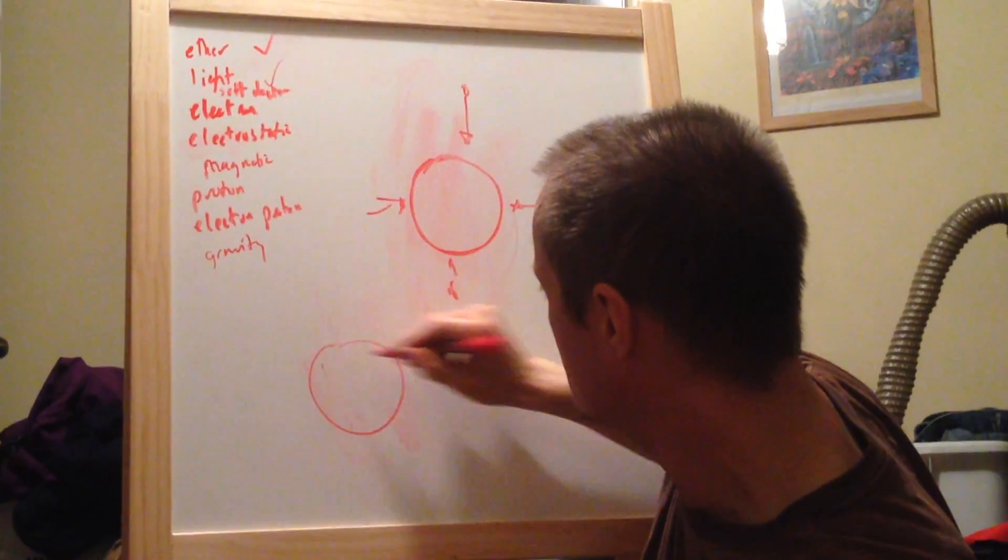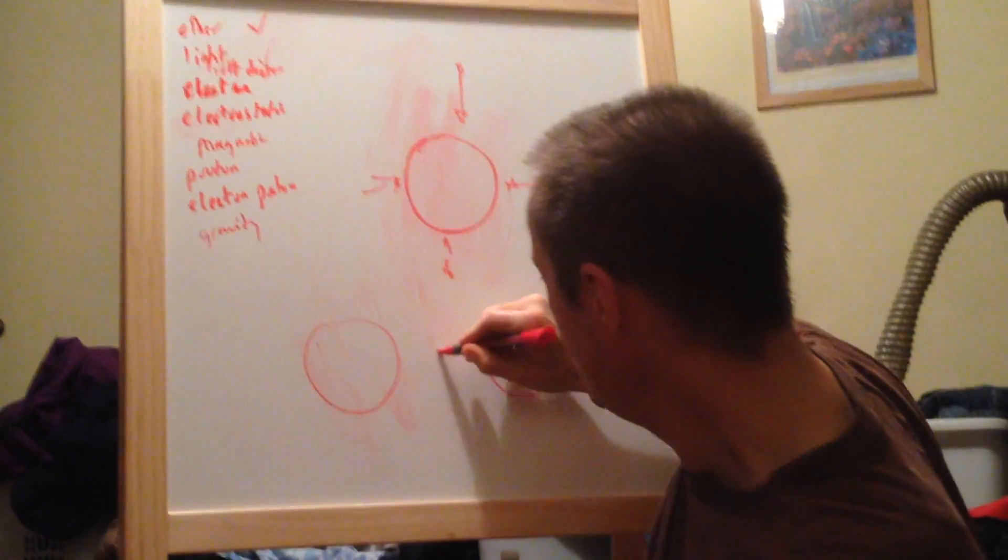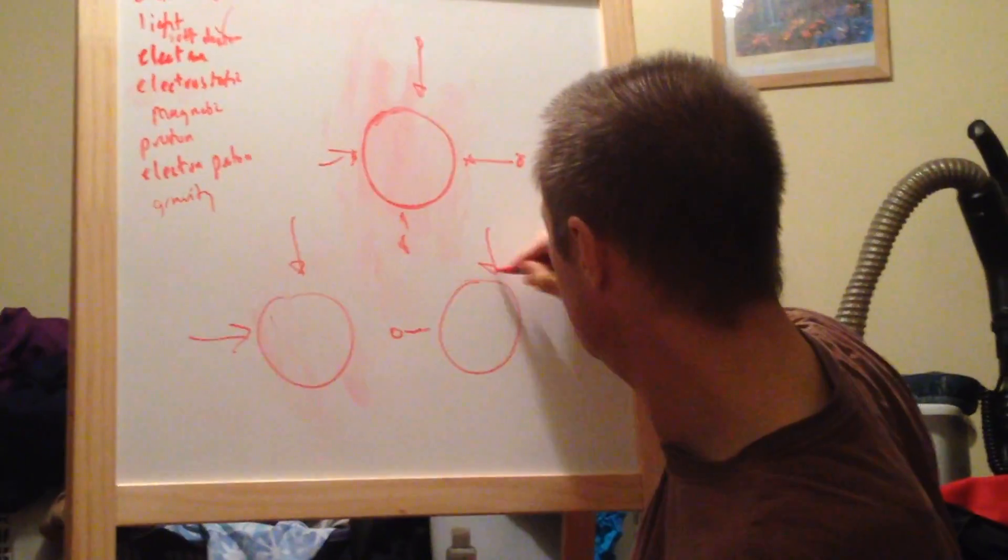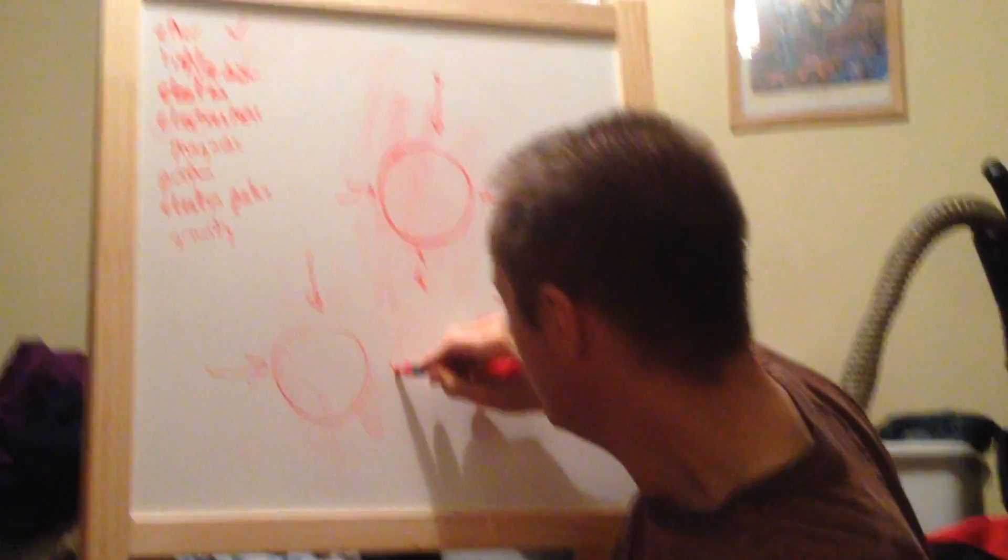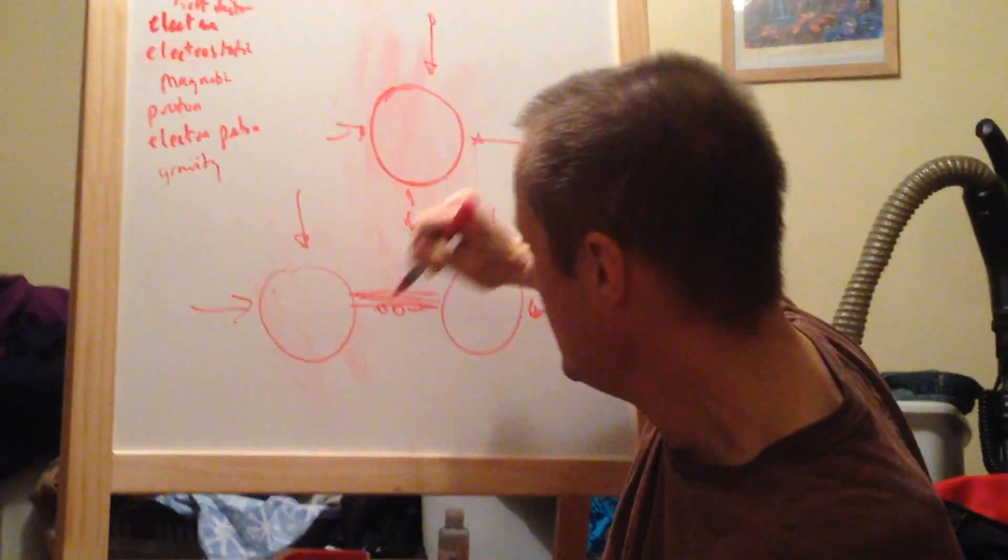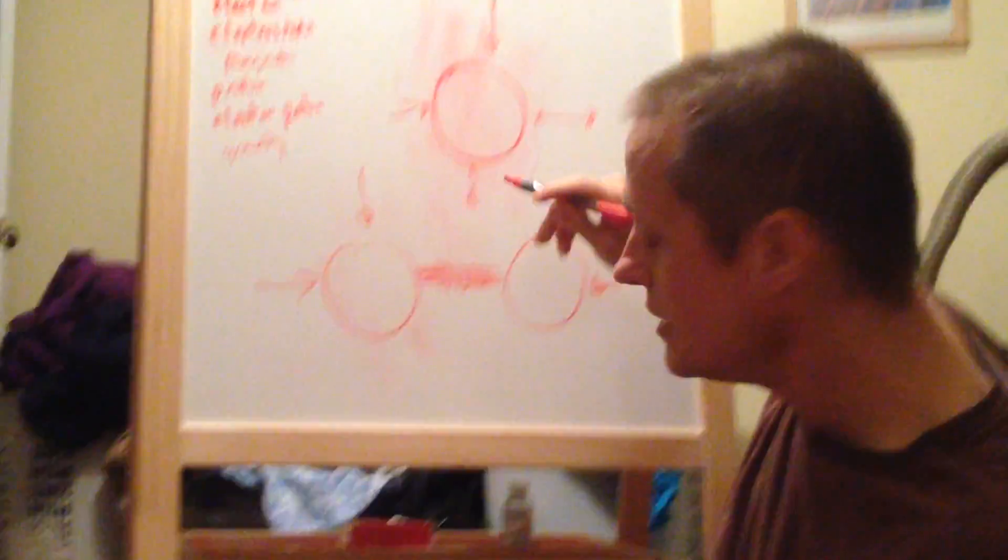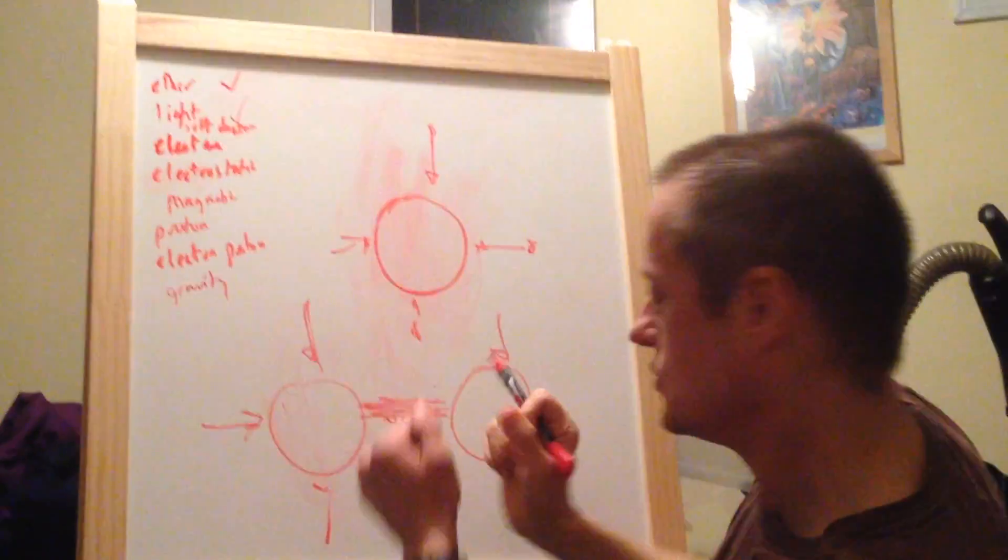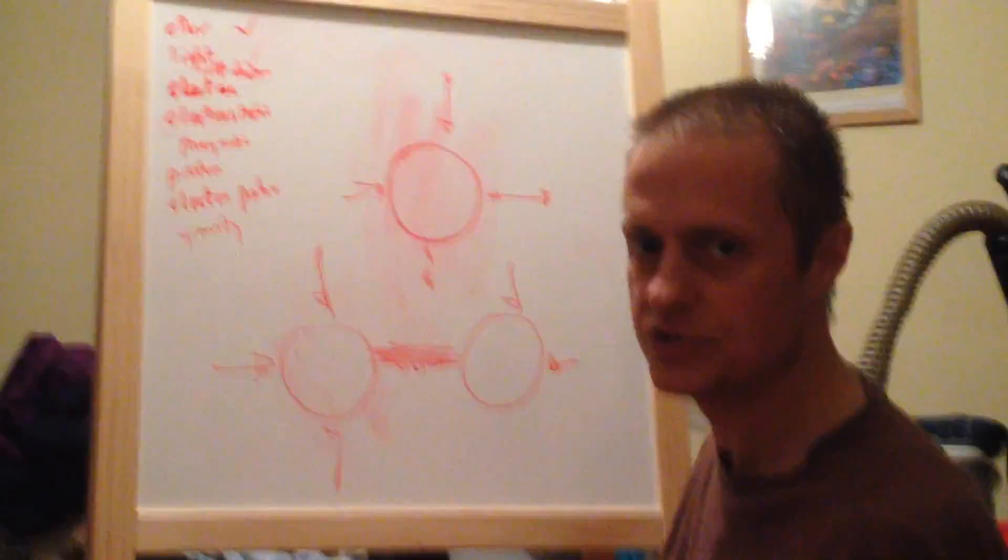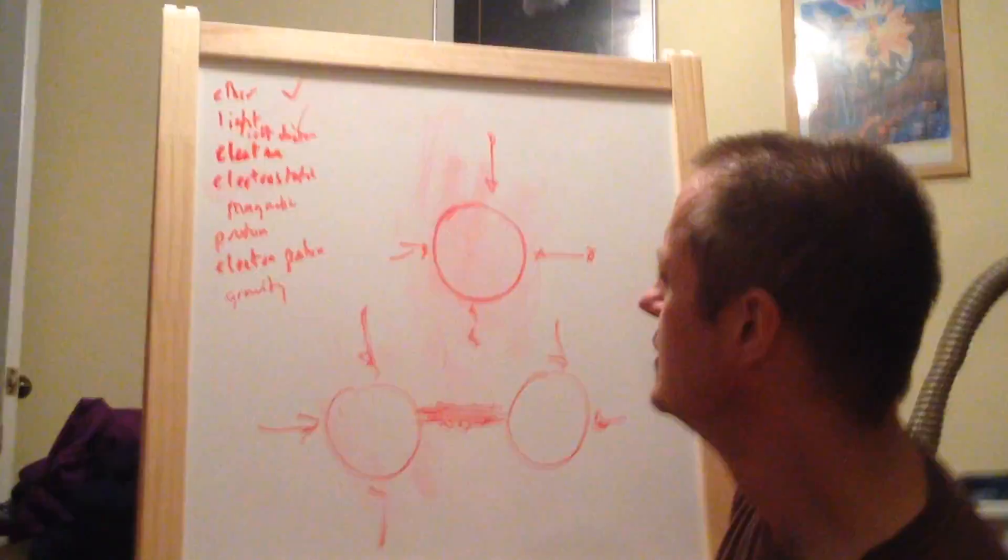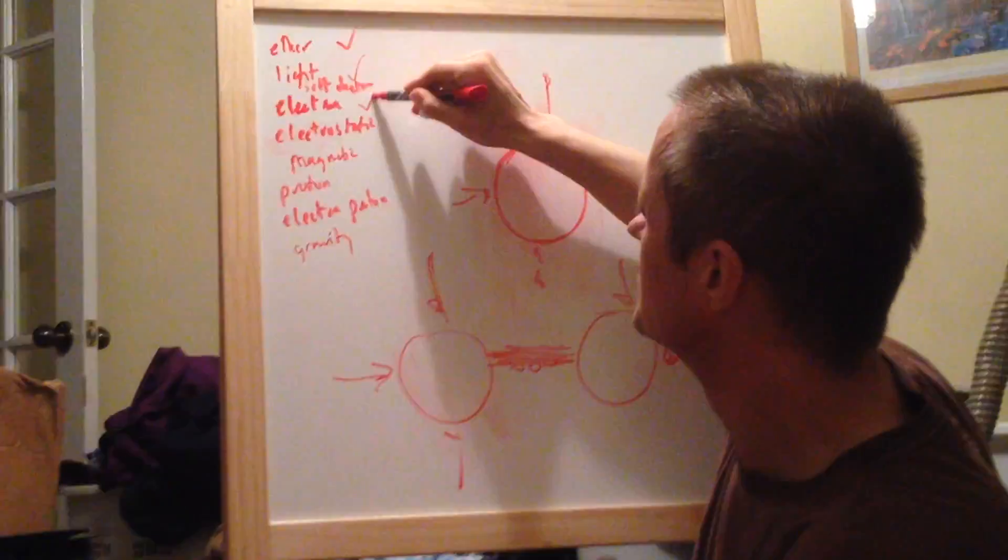So, you bring now a second electron nearby. And some of these ether particles are randomly hitting it, all sides. But some of the ether particles are in between. So, rather than just randomly hitting it, it's like a pinball effect. Because they bounce back and forth quickly, it gives more pressure than just the random hitting. So, that's electrostatic repulsion. That's why two electrons repel each other. So, now we've done electron, electrostatic.